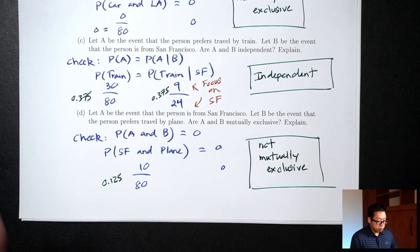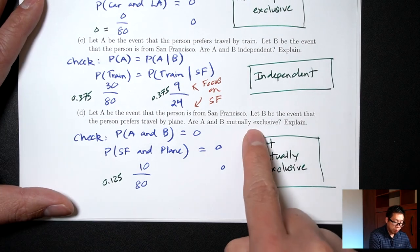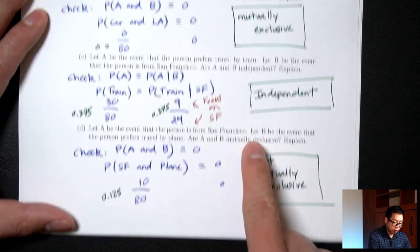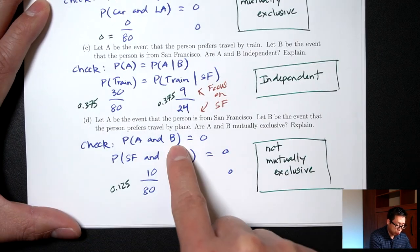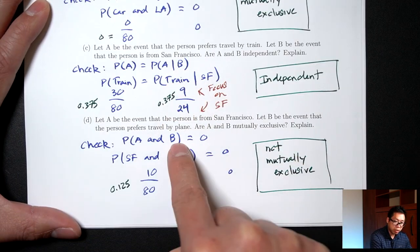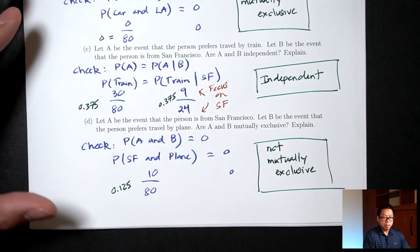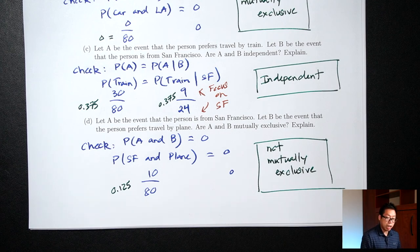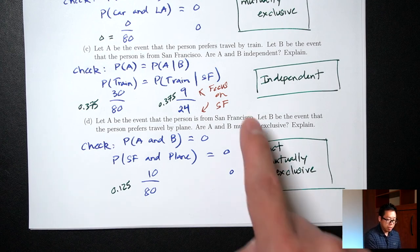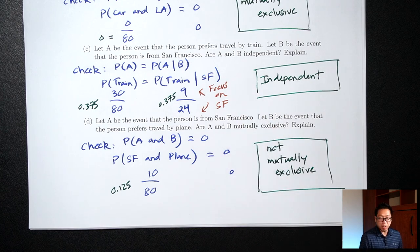Pay attention to whether the question is asking about mutually exclusive or independent — that tells you which equation to check. Once you figure out which equation to check, find the left side, find the right side, and then check whether they are equal or not. If they are equal, it's yes. If they're not equal, it's no.